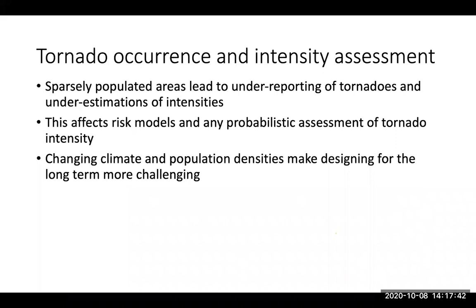Tornadoes in North America are primarily occurring on the Great Plains in what we call Tornado Alley — these are farming regions. By definition they are not highly populated like suburban areas, though they do have areas with significant populations, and when those get hit it can be devastating. But a lot of the areas have relatively few people, and this is going to affect the probabilistic estimates.